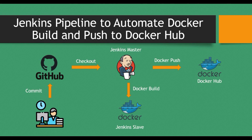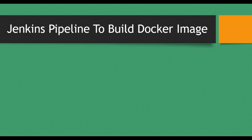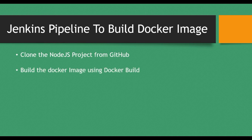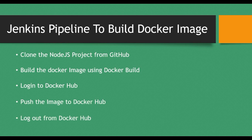You'll have a versioned application image in Docker Hub which can be downloaded later to build containers. We'll be stopping at the Docker Hub push phase and log out from Docker Hub. So the steps are: clone the Node.js project from GitHub, build the Docker image using docker build, log into Docker Hub, push the image, and then log out. We'll have five stages in the pipeline, each with its own actions.